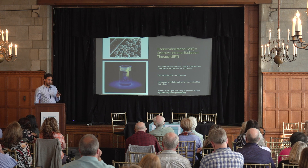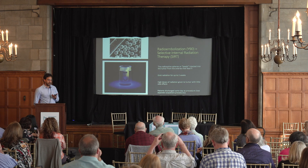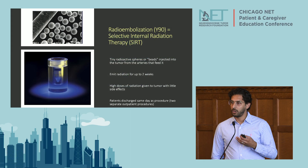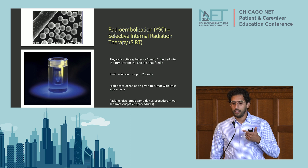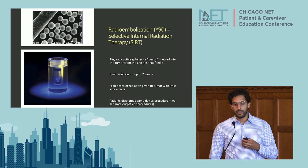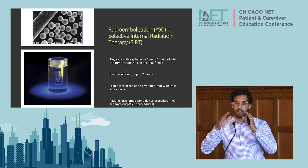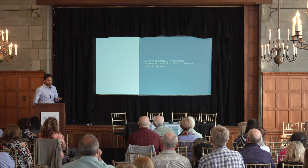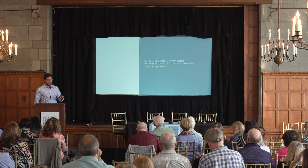I'm going to focus on radio embolization, which is our newest treatment that we offer. You'll hear different terms — radio embolization, Y90, or selective internal radiation therapy. They are tiny radioactive spheres or beads that we inject into the tumor from the arteries that feed it. These beads only emit a radiation field of about one millimeter, so they're very, very targeted, and they last for up to two weeks. You're able to give very high doses of radiation without a lot of the side effects of giving it systemically or from the outside. And this is a single-patient procedure.